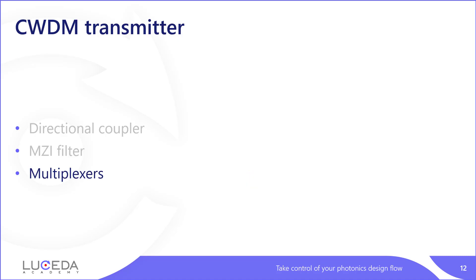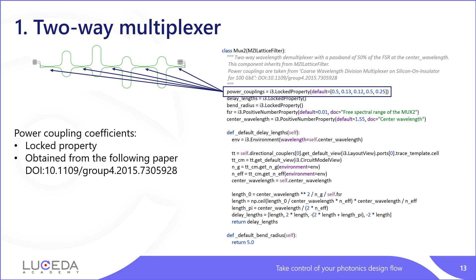The next step is to use the MZI lattice filter to design multiplexers. First, we are going to design a two-way multiplexer — one where you have two wavelengths at the input and split them into two different channels at the output. The first thing we define are the power couplings, which is a list taken from a published paper and have been optimized and simulated. For this reason, this is a locked property, meaning it cannot be changed from the outside.